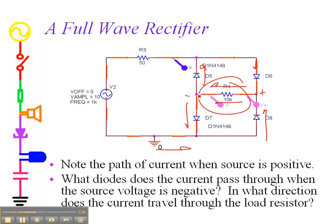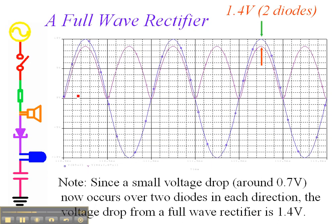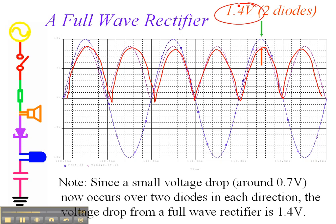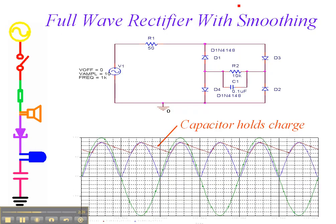What we end up with is something where we get positive voltages — always positive voltages — again with 1.4 volts lost because we have to turn two diodes on in order to make this happen. Again, if we add a little bit of capacitance across there, we get something that charges up and kind of holds the charge. On average we end up with something that looks sort of like DC with a little bit of ripple on top of it.